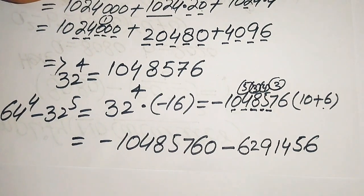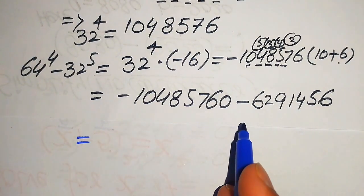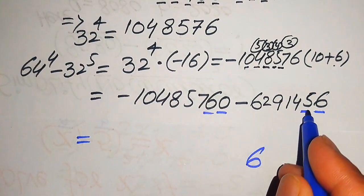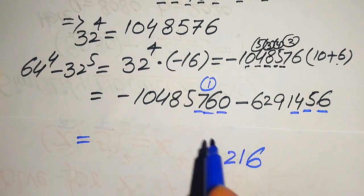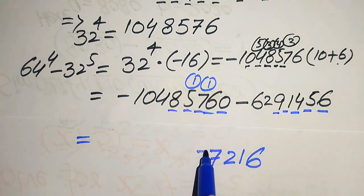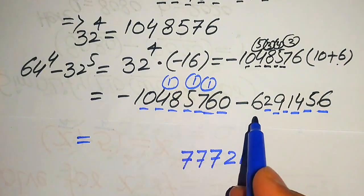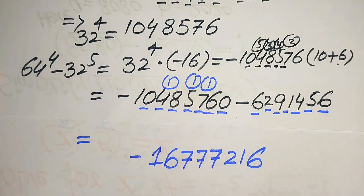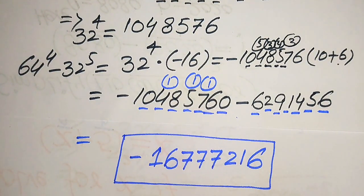Now in the final step we add these two values. Both terms are negative, which means we add their absolute values: 0 plus 6 is 6; 6 plus 5 is 11, write 1 carry 1; 7 plus 4 is 11 plus 1 is 12, write 2 carry 1; 5 plus 1 is 6, 6 plus 1 is 7; 8 plus 9 is 17, write 7 carry 1; 4 plus 2 is 6, 6 plus 1 is 7; 0 plus 6 is 6; and finally 1. Since both values are negative we place the negative sign, and this is our final answer. Thank you so much for watching this video — please subscribe to my channel for more exciting videos.